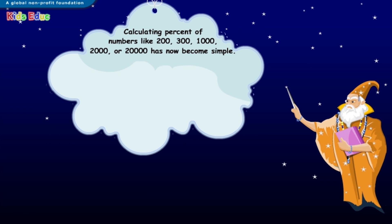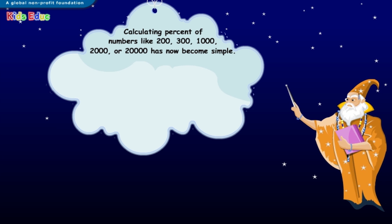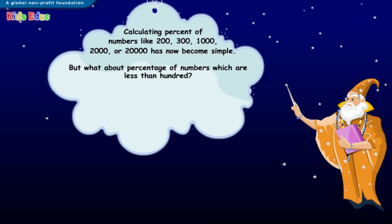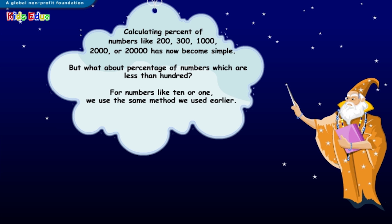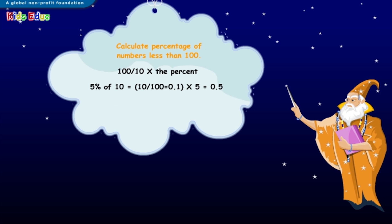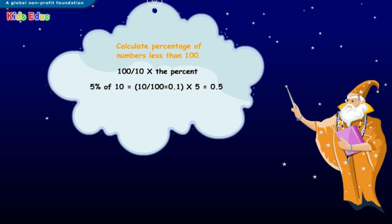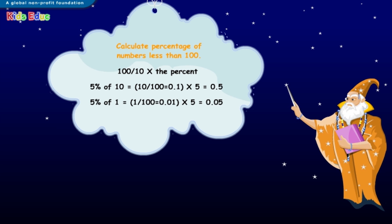Calculating percent of numbers like two hundred, three hundred, one thousand, two thousand, or twenty thousand has now become simple. But what about percentage of numbers which are less than one hundred? For numbers like ten or one, we use the same method used earlier. For example, five percent of ten is ten divided by one hundred, equal to zero point one, multiplied by five, equal to zero point five. And five percent of one is one divided by one hundred, equal to zero point zero one, multiplied by five, equal to zero point zero five.